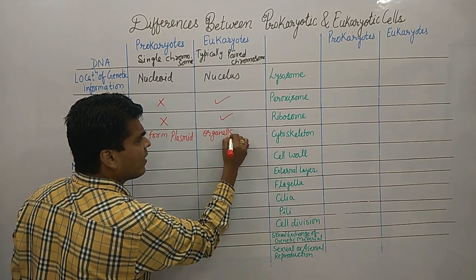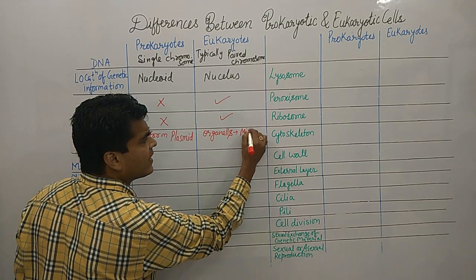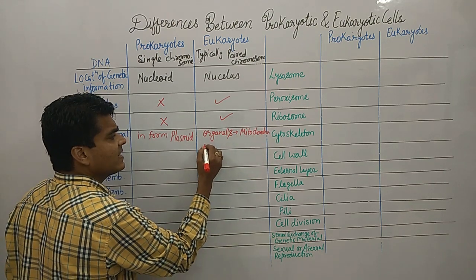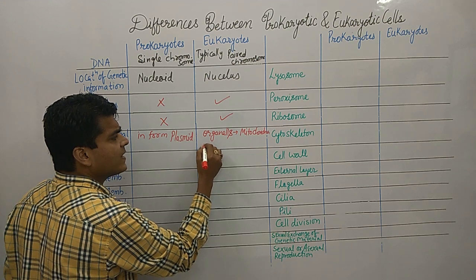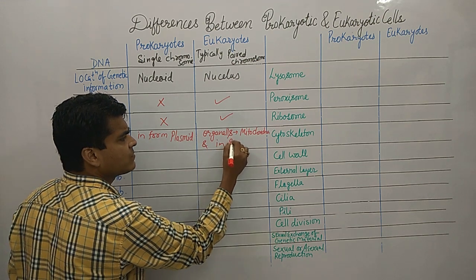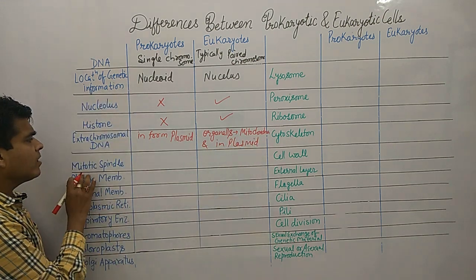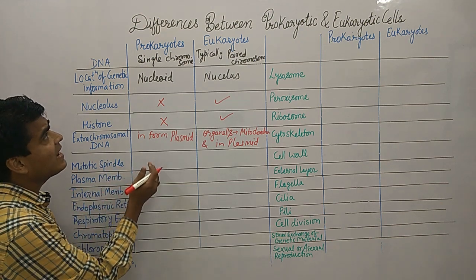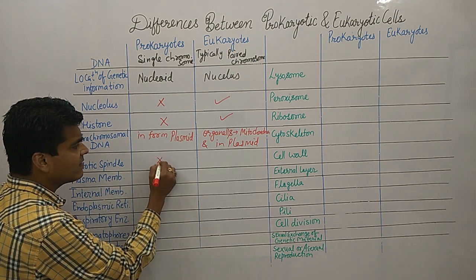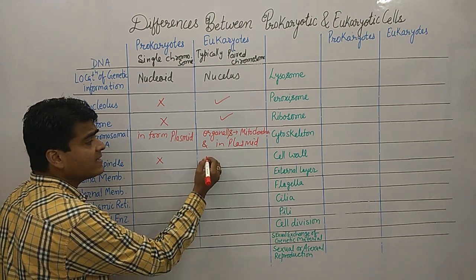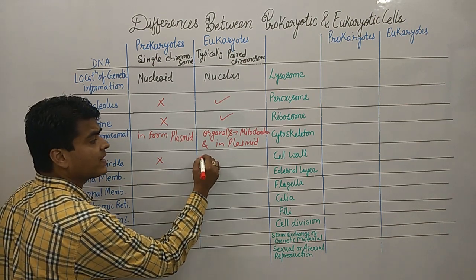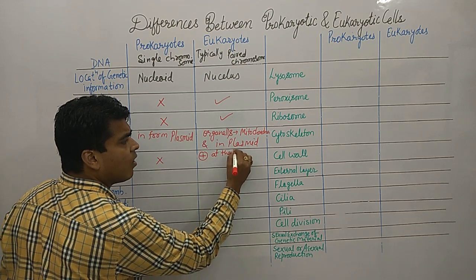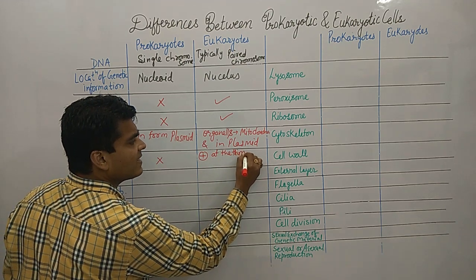Extra-chromosomal DNA in eukaryotes is present in organelles like mitochondria, as well as in plasmids. Mitotic spindles are absent in prokaryotes, but in eukaryotic cells they are present at the time of cell division.